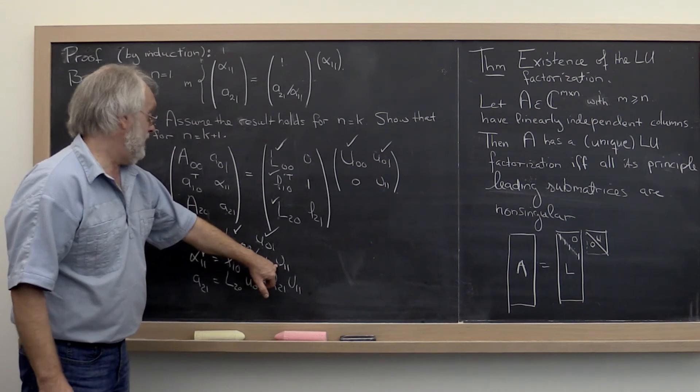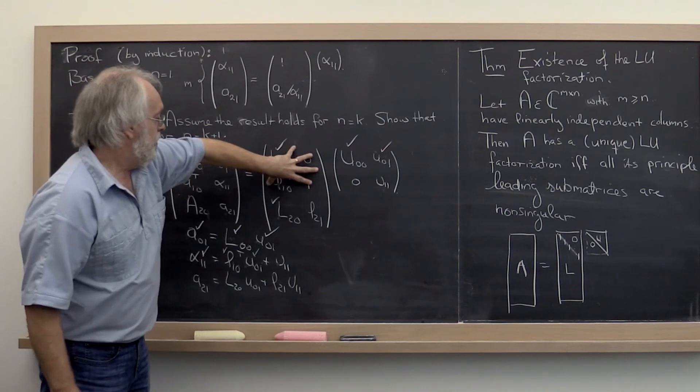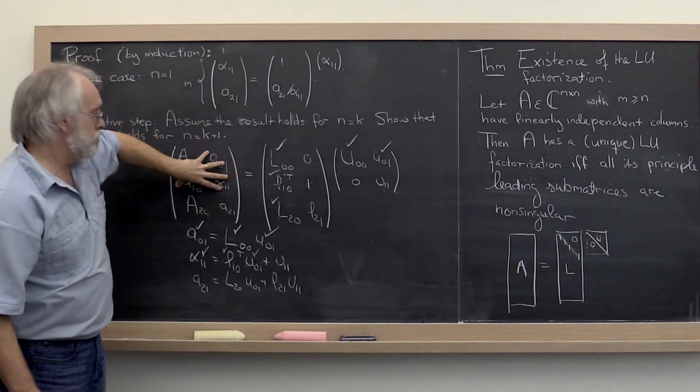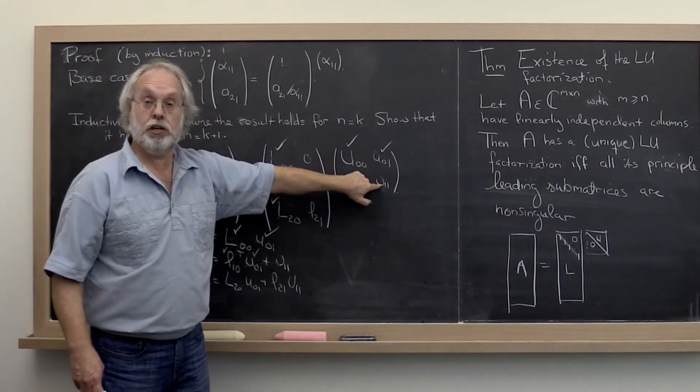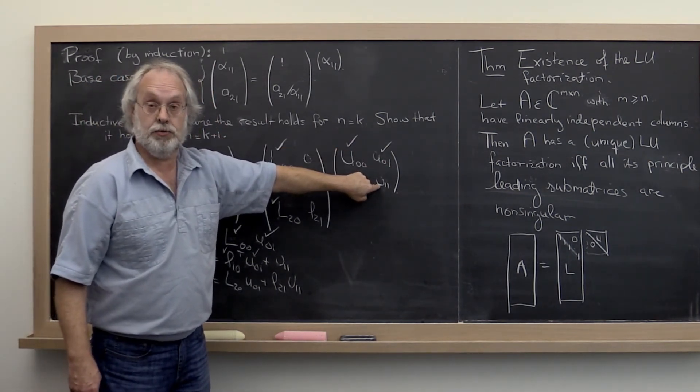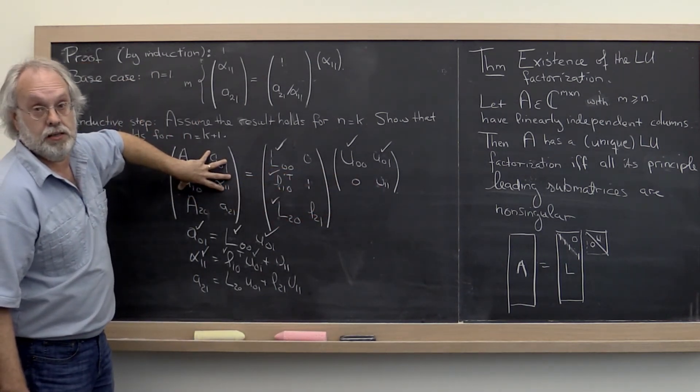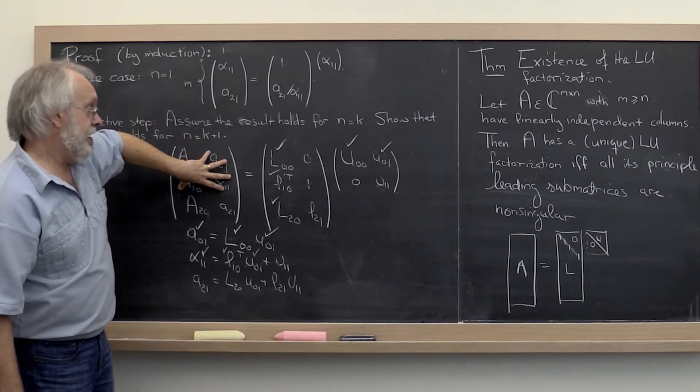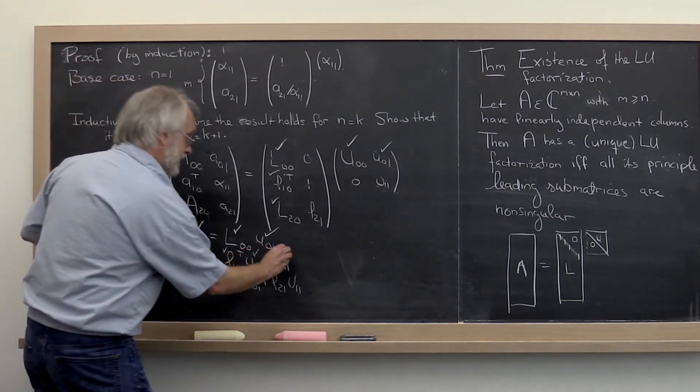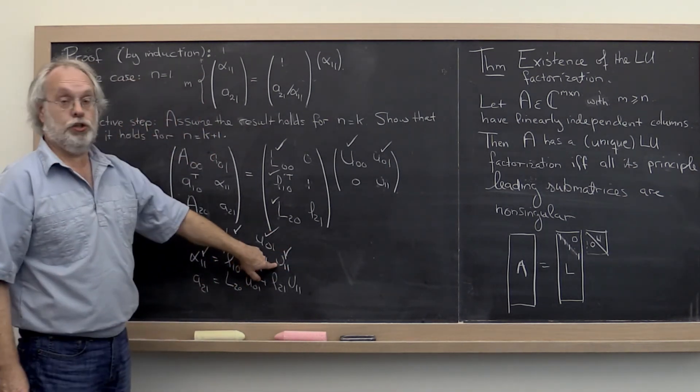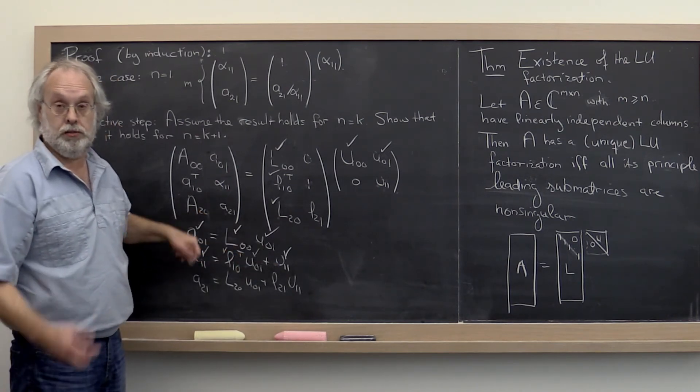But U11 can't be zero because if it is, then this block times that block is equal to this block. But if you do this times that and this is zero, then you actually create a singular matrix. And this here is a leading principal submatrix, a principal leading submatrix of A, and it can't be singular. So what we conclude is that U11 is uniquely determined and it's not zero. And we have a formula for computing it. We're good.